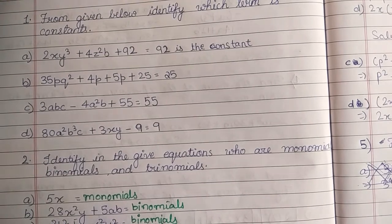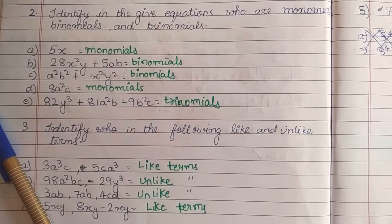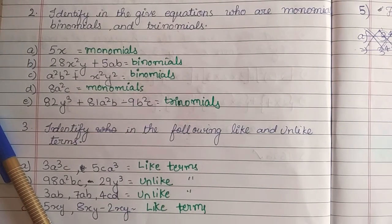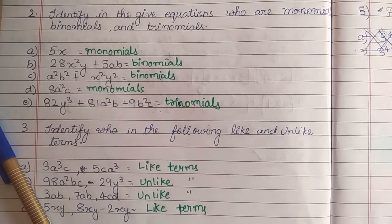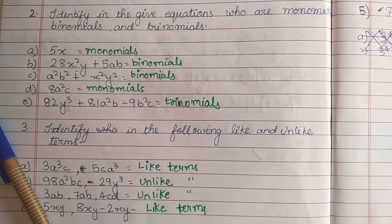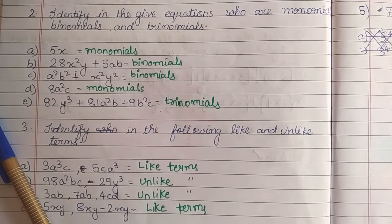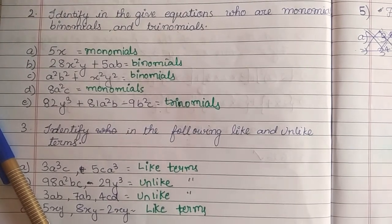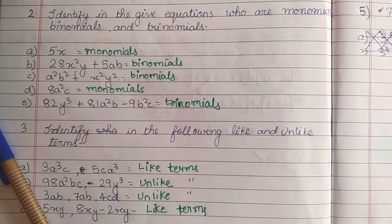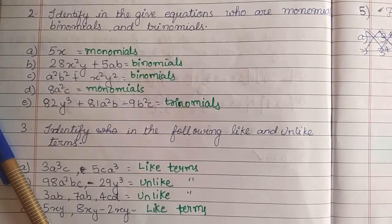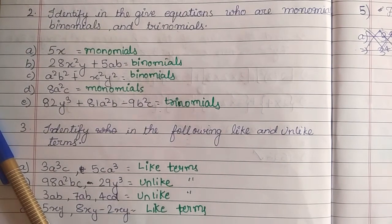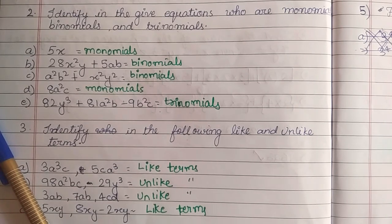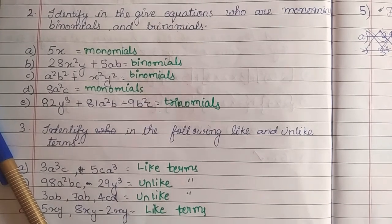So let's continue with the second question which is identify in the given equations who are monomials, binomials and trinomials, which also I have taught you in the earlier. So in this all the questions are related to the earlier videos of the algebra. So please must watch the earlier videos also. So let's continue. a) 5x which is monomial. b) 28x²y + 5ab which is binomial. c) a²b² + cx² and y² which is also binomial. d) 8a²c which is monomial. e) 82y³ + 81a²b - 9b²c which is trinomial.